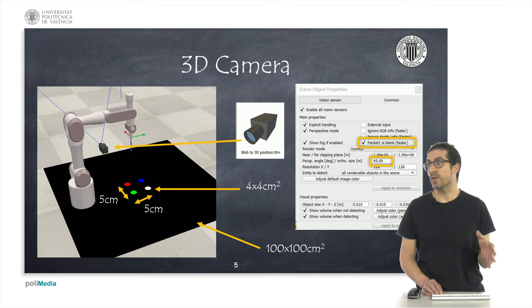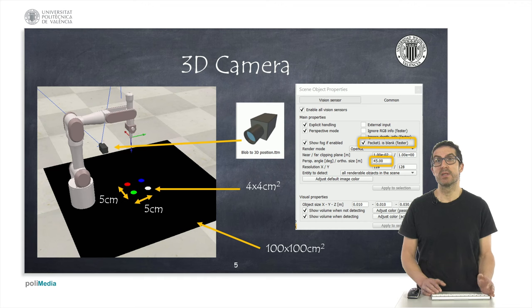The idea is that you can drag this object into your scene, and we will modify the perspective angle of the camera to 45 degrees, as you can see here in the property on the vision sensor properties. You can leave the rest of the parameters by default, except the packet one is black option. If you want, you can mark this option if you want to speed the calculations, but you won't really notice the real difference.